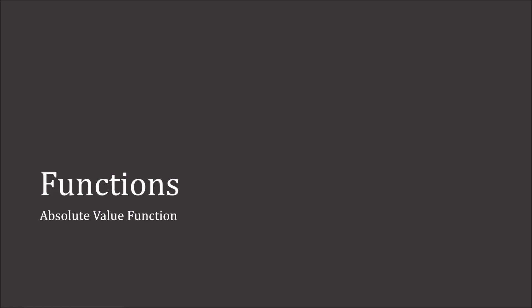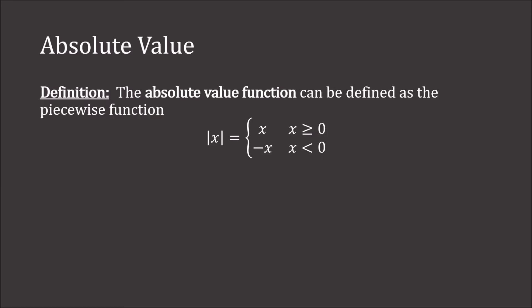We will now study the absolute value function, which can be defined as a piecewise function. It is the function: absolute value of x equals x if x is greater than or equal to zero, and negative x if x is less than zero.